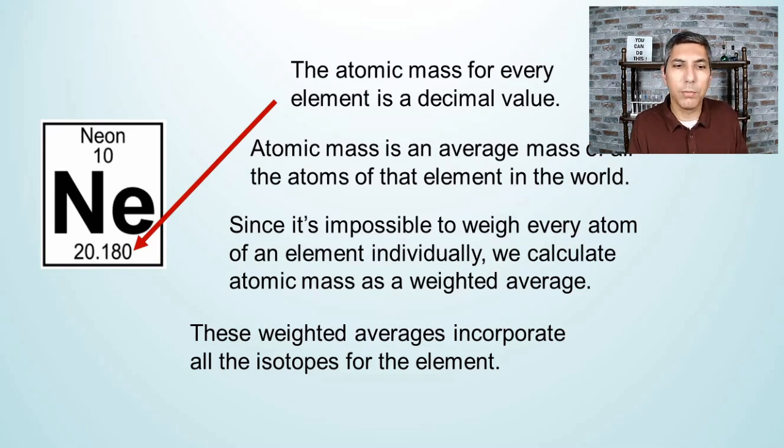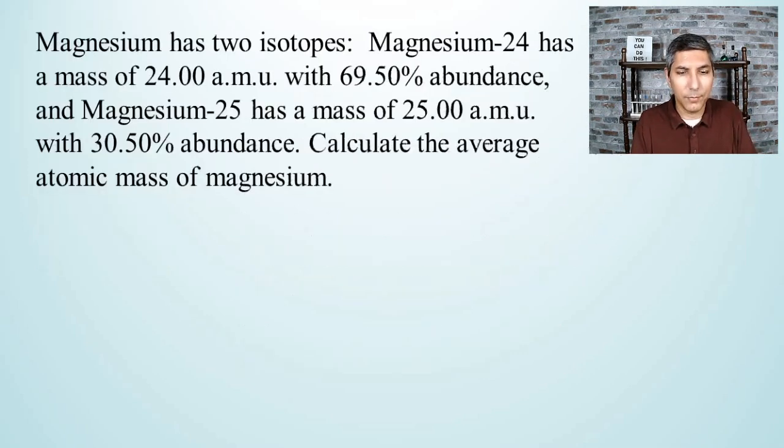We're going to do two fairly simple examples, and hopefully from this, you'll see how average atomic masses are calculated. Here's the first problem. It says magnesium has two isotopes. Magnesium-24 has a mass of 24.00 AMU with 69.50% abundance, and magnesium-25 has a mass of 25.00 with 30.50% abundance. Calculate the average atomic mass of magnesium. Well, once again, we start with the first isotope. It has a mass of 24.00.